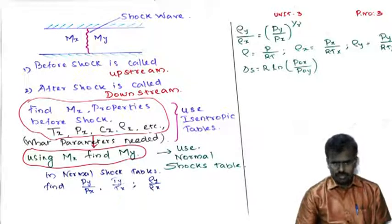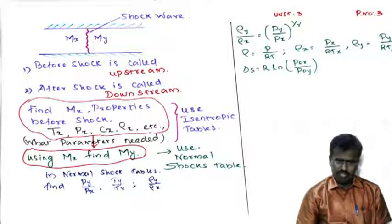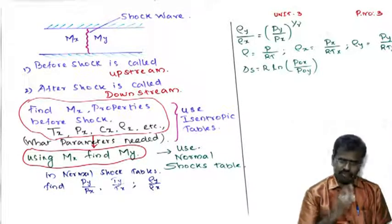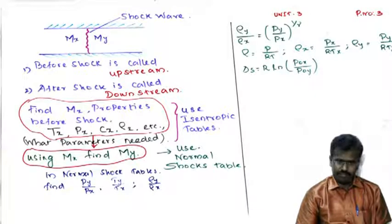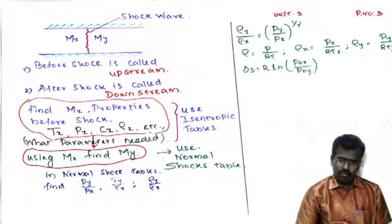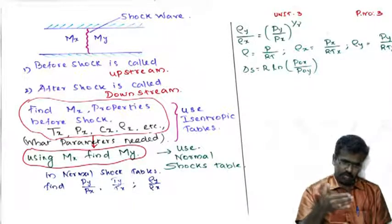These are the steps to solve a problem before and after a shock. For the before-shock properties (mx properties): first find all the properties of mx — that is tx, px, cx, rho x — whatever you need. Use your isentropic flow tables to find all these values. Then use your normal shock table to find my.